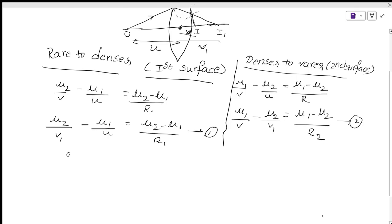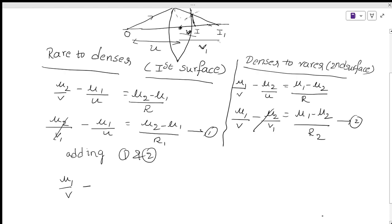Adding Equation 1 and Equation 2 is very simple. The mu2 by v1 term is positive in Equation 1 and the minus mu2 by v1 term is negative in Equation 2, so they cancel. After cancellation, we get: mu1 by v minus mu1 by u equals mu2 minus mu1 by R1 plus mu1 minus mu2 by R2.